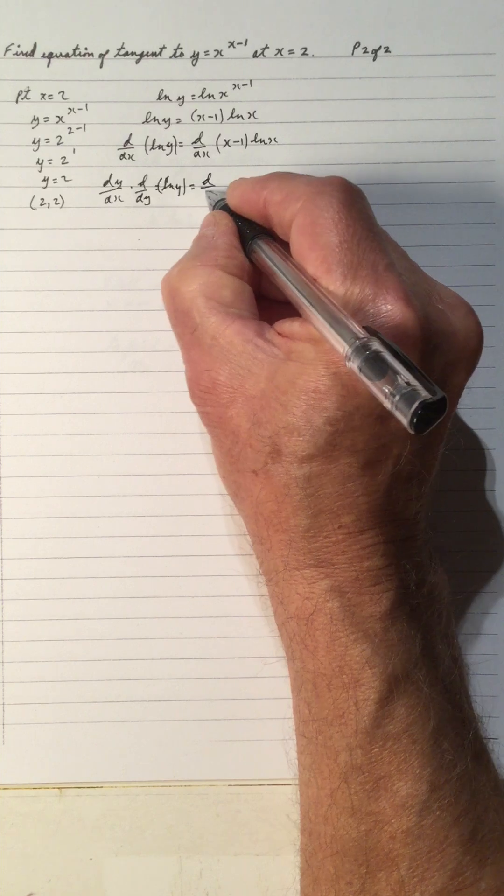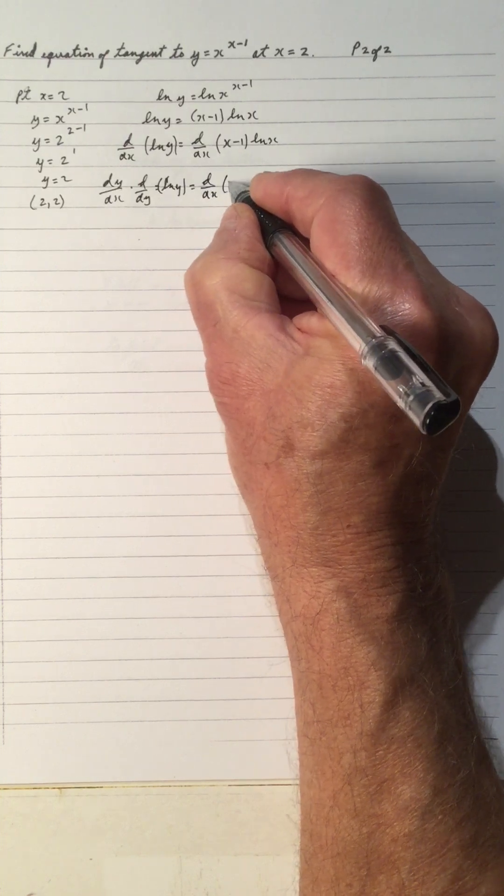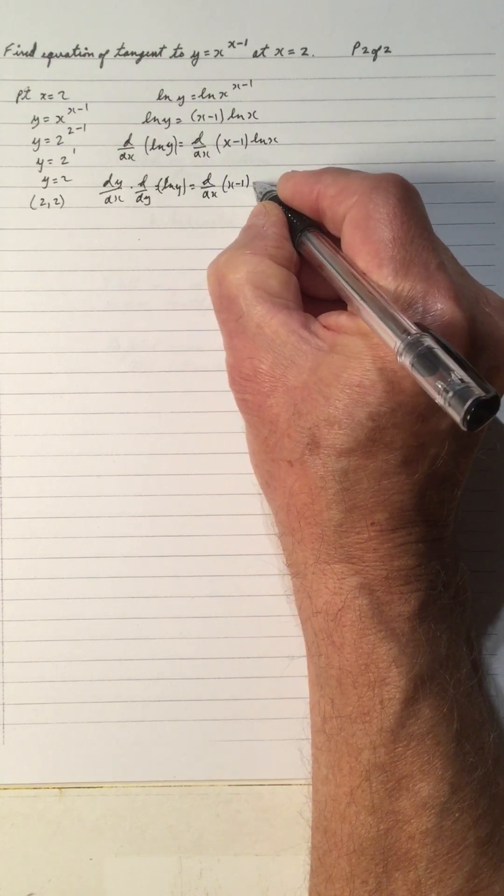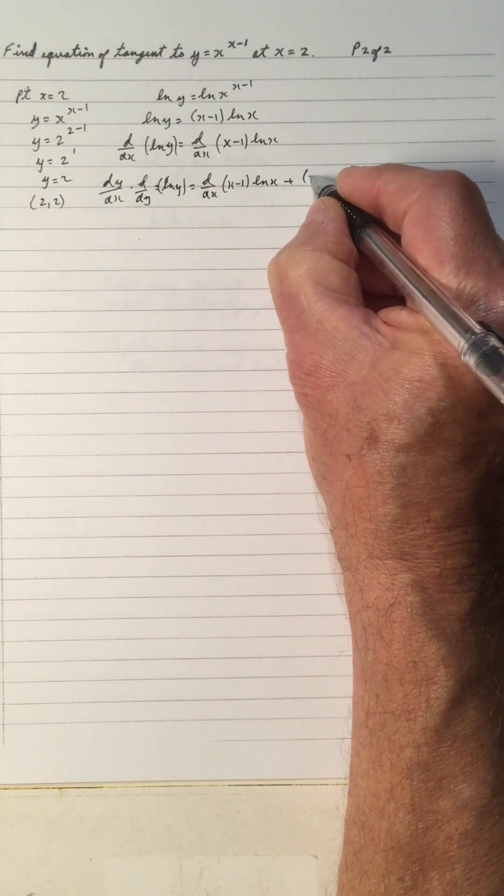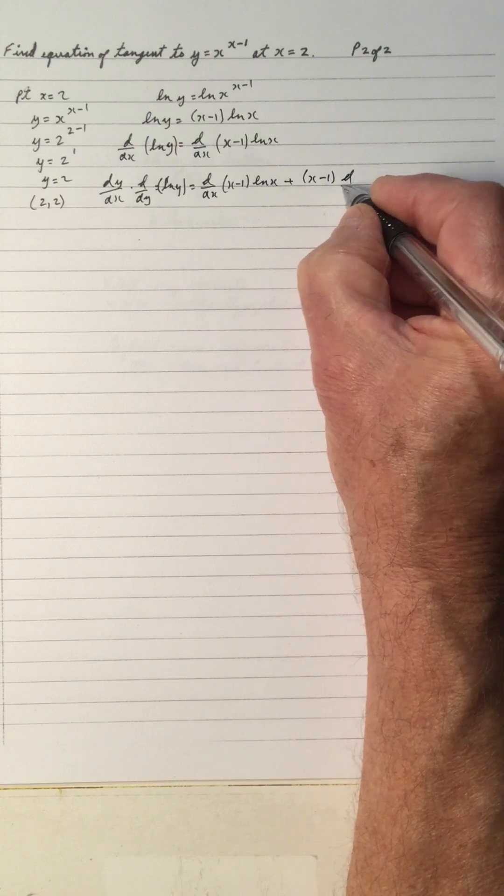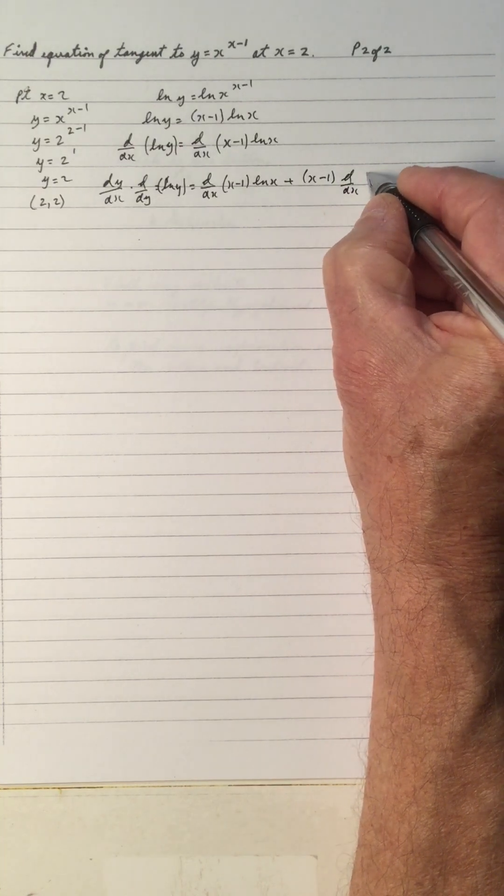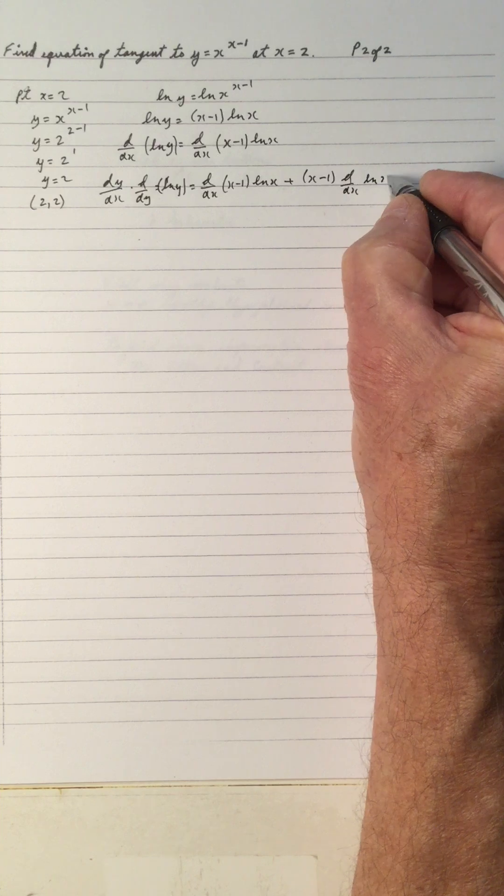So it's d dx of d f, which is d dx of x minus 1, times d g, ln x, plus f, x minus 1, times d dx of ln x.